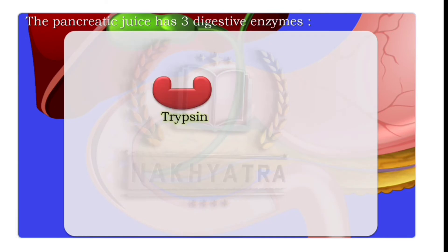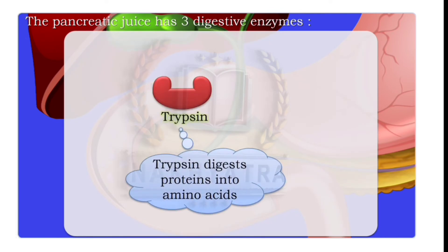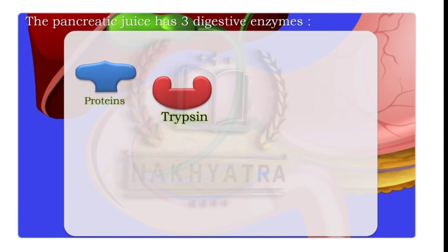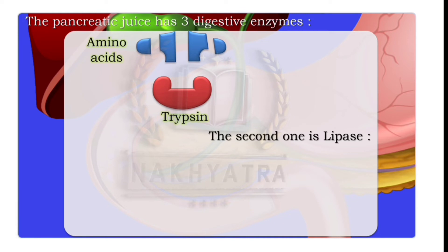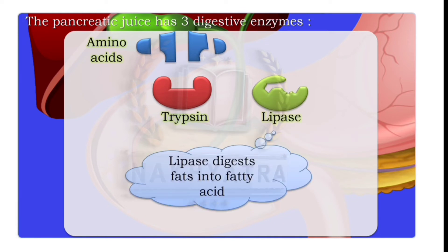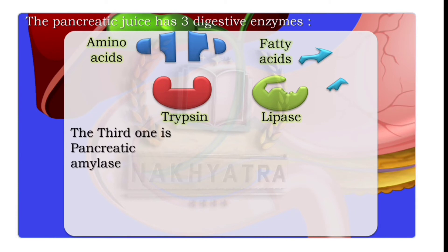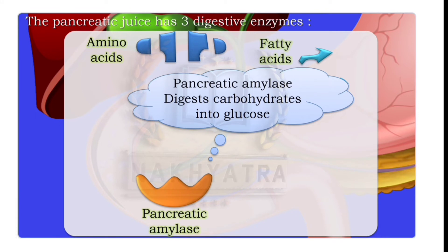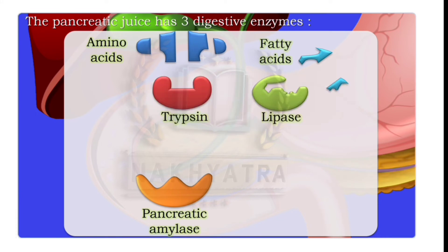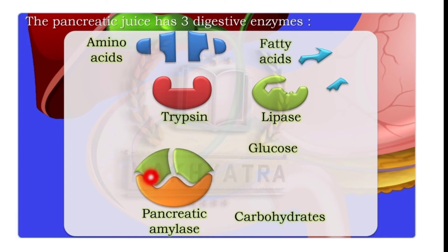The first enzyme is trypsin, which digests proteins into amino acids. The second digestive enzyme is lipase, which digests fats into fatty acids. The third digestive enzyme is pancreatic amylase, which digests carbohydrates into glucose.